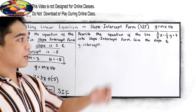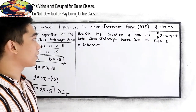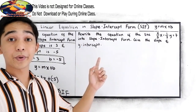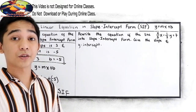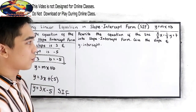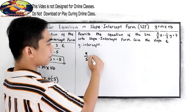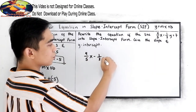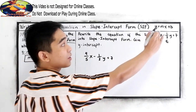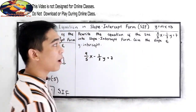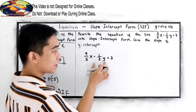Next number: Write the equation of the line 4 over 5x minus 1 over 2y is equal to 7 into slope-intercept form. We have the given 4 over 5x minus 1 over 2y is equal to 7. We're going to write it into y is equal to mx plus b, so we need y on the left side of the equation.